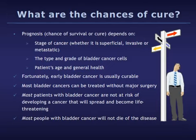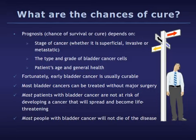Prognosis is a word that means outlook, or the chance of cure or survival. For bladder cancer, prognosis depends on the stage of the cancer — whether it is superficial, invasive, advanced, or metastatic — the type and grade of bladder cancer cells, and the patient's age and general health. Fortunately, early superficial bladder cancer is usually curable, and most bladder cancers can be treated without major surgery. Most patients with superficial bladder cancer are not at risk of developing a cancer that will spread and become life-threatening, and most people with bladder cancer will not die of their disease.